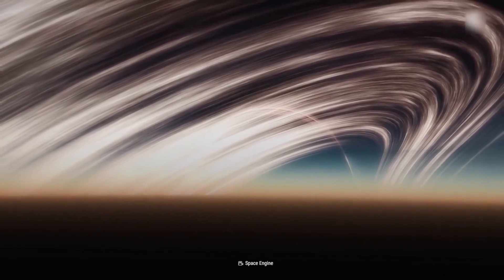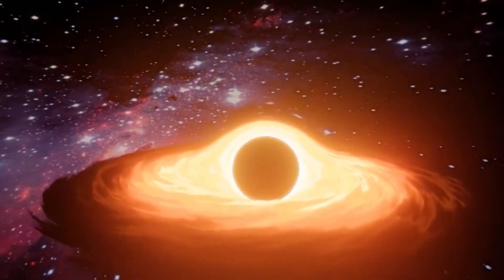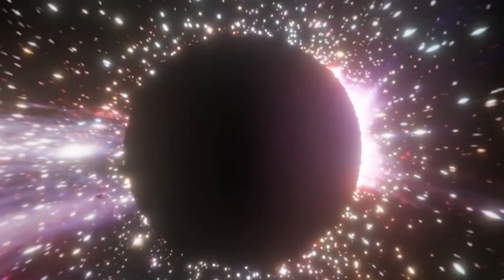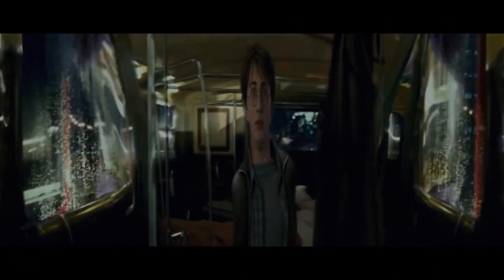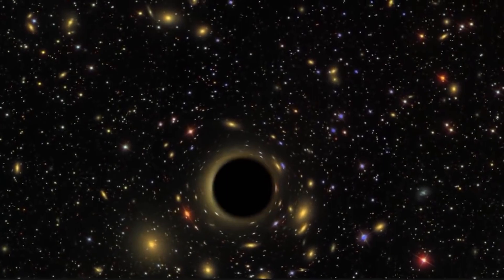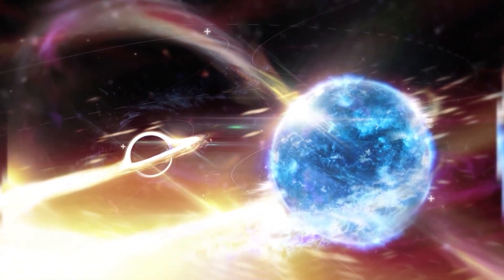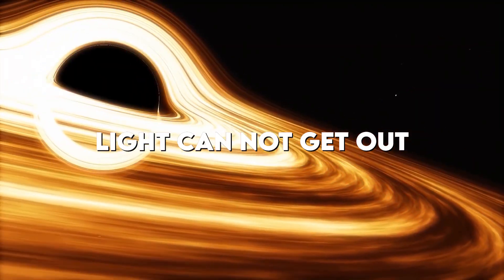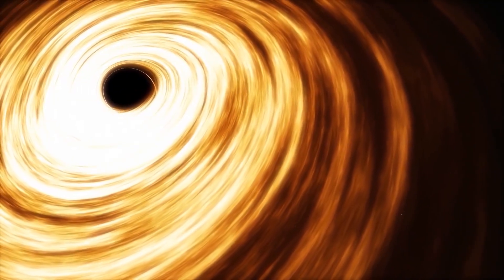First of all, let me enlighten you about what actually is a black hole. A black hole is a region of space-time where gravity is so strong that nothing, that is no particles, no human, or not even electromagnetic radiation, can escape from it. It is a space where gravity pulls so much that even light cannot get out. Scary, isn't it? The gravity is so strong here because the matter has been squeezed into a tiny space. This can happen when a star is dying.